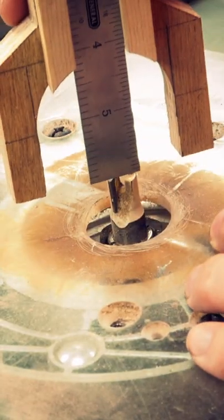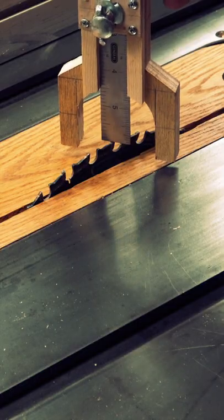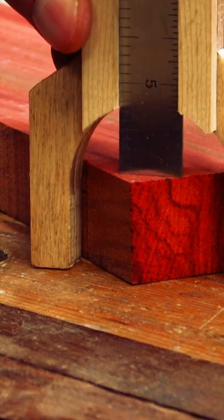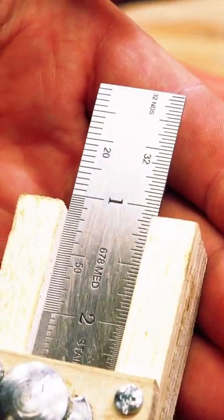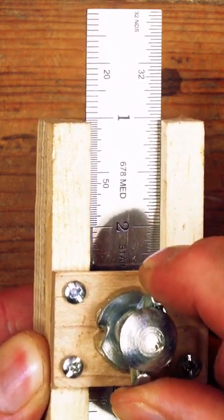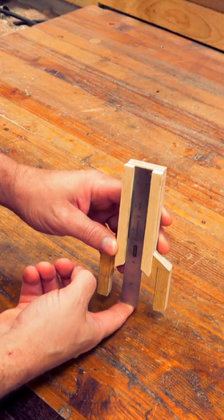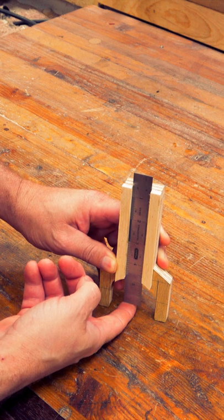Besides drill bits, this gauge works really well to set the height of router bits and table saw blades, as well as measuring the thickness of a piece of stock. You can add a clamp to the front to lock it in place. If you're using a steel ruler, it works really well with a magnet all on its own.